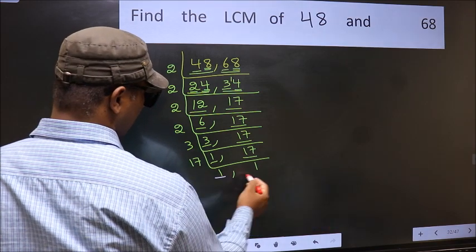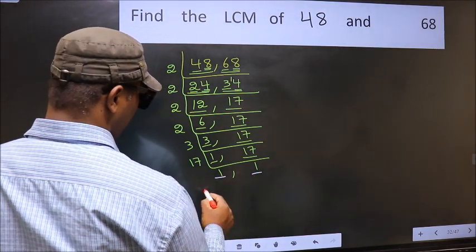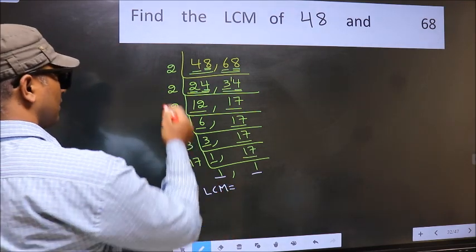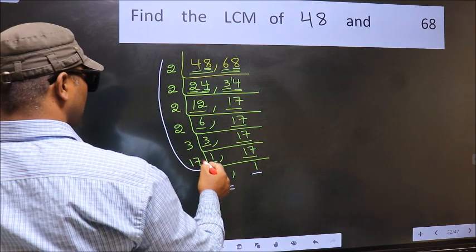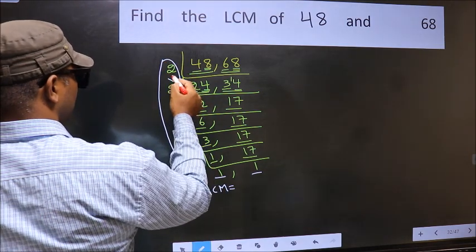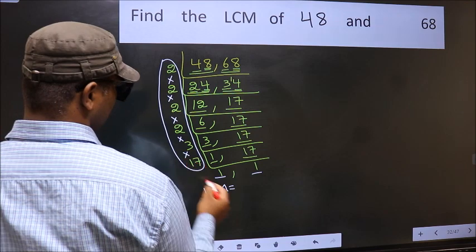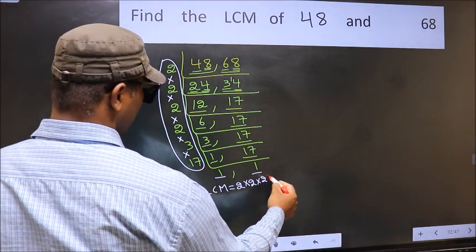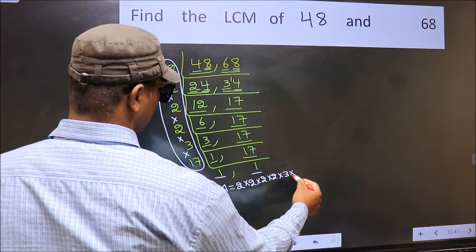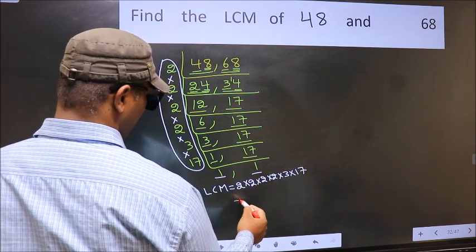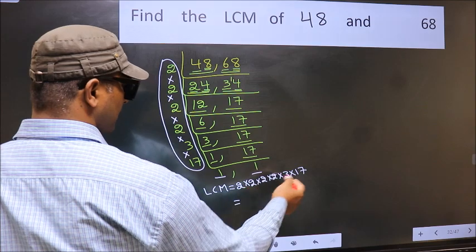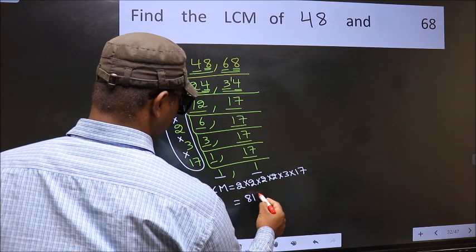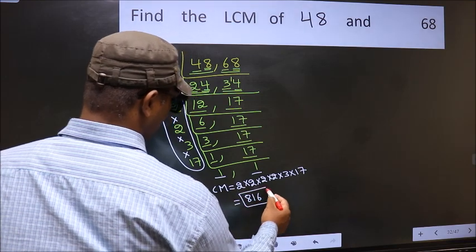So we got 1 in both places. Our LCM is the product of these numbers: 2 times 2 times 2 times 2 times 2 times 3 times 17. When we multiply these numbers, we get 816. So 816 is our LCM.